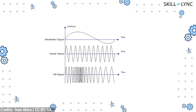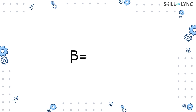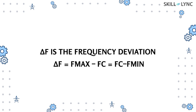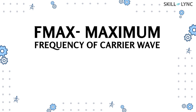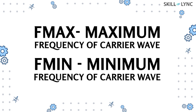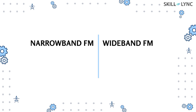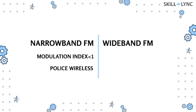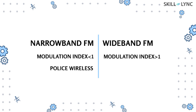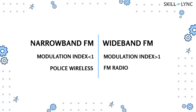The frequency is varied to transfer the message signal. For a frequency modulated signal, there is a modulation index given by beta equals delta-f divided by fm, where delta-f is the frequency deviation — the difference between the frequency of the carrier wave and the maximum and minimum of the modulated wave. F-max is the maximum frequency and F-min is the minimum frequency of the carrier wave. Based on the modulation index, FM can be divided into narrow band FM (modulation index less than one, used in mobile communications like police wireless radios) and wide band FM (modulation index greater than one, used in entertainment and broadcasting applications like FM radio).